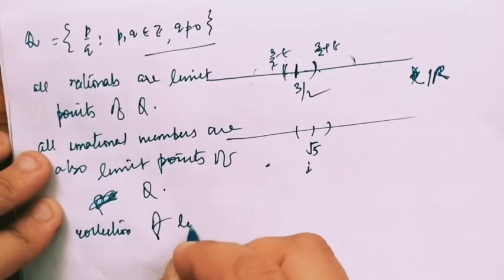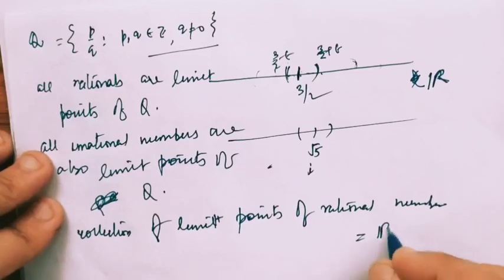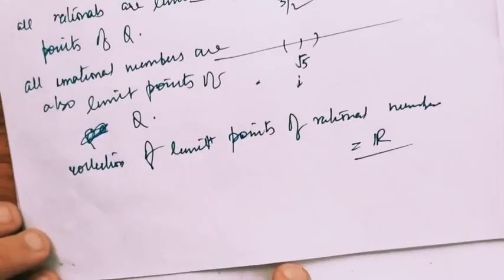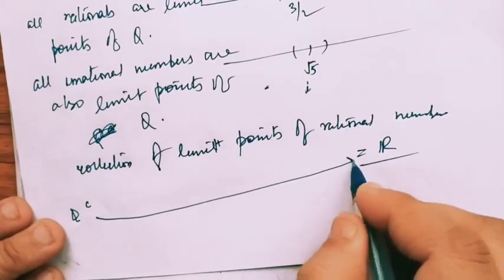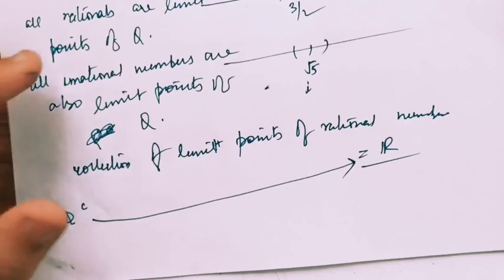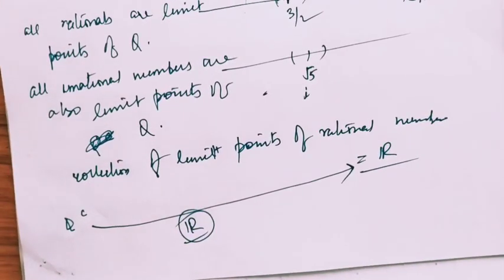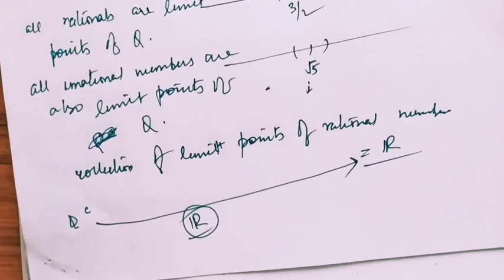So the collection of all limit points of Q — the set of rational numbers — is equal to the entire set of real numbers R. Similarly, for Q complement, all limit points are also included in R. Each and every real number is a limit point of Q as well as of Q complement. So the derived set of Q and the derived set of Q complement are both equal to R. For the set of real numbers itself, any neighborhood will contain infinite members of R, so the derived set of R is R itself.